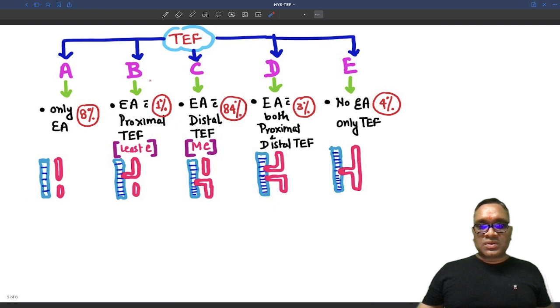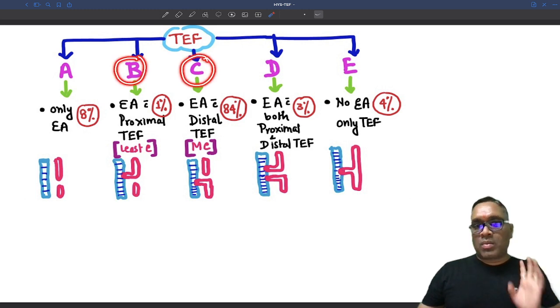And what are the types of tracheoesophageal fistula? There are total 5 types which we have devised them A, B, C, D, E. Out of these, remember C is the commonest type. And B is the least common type.